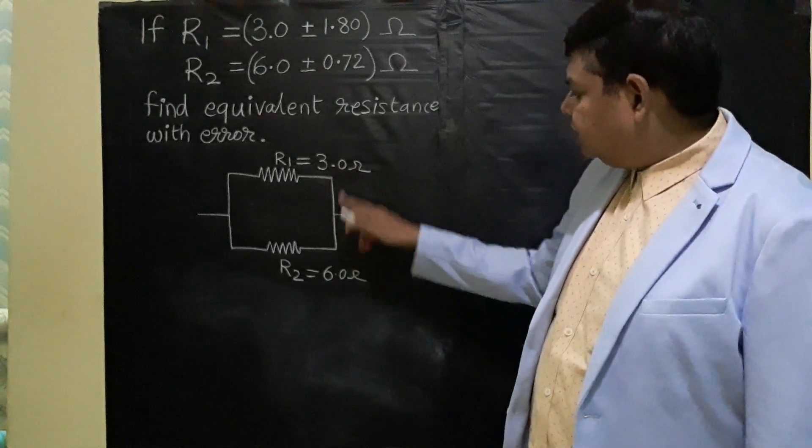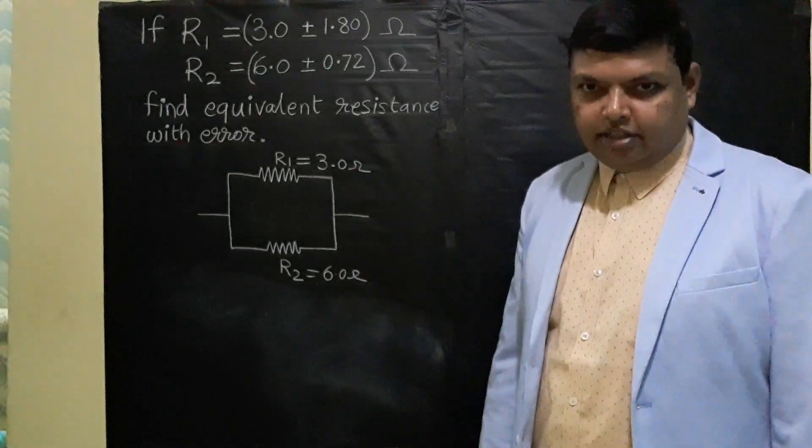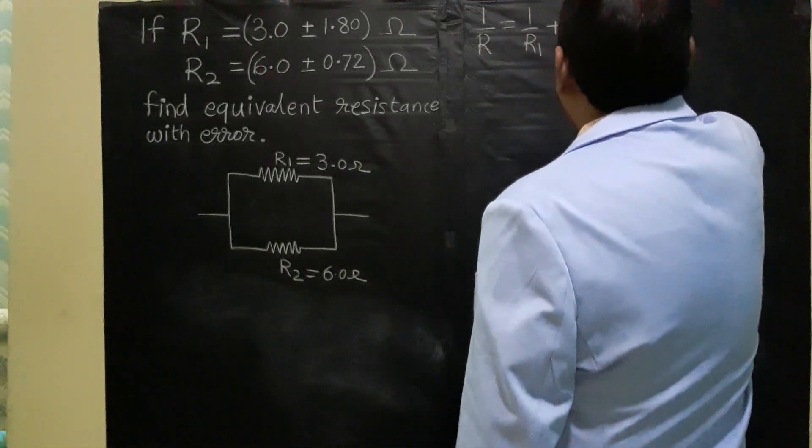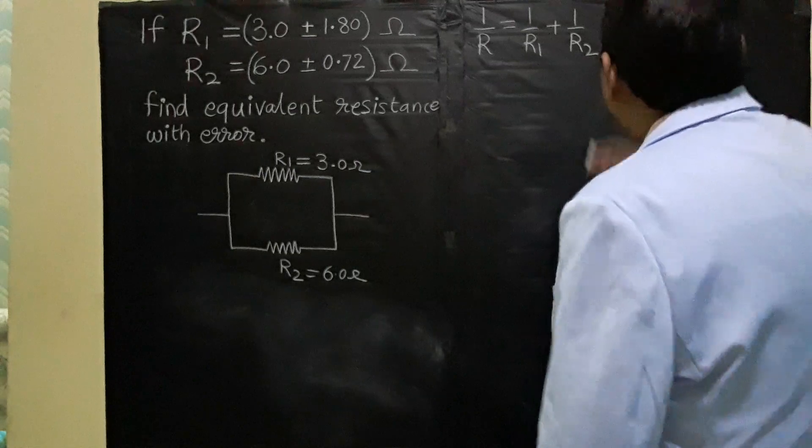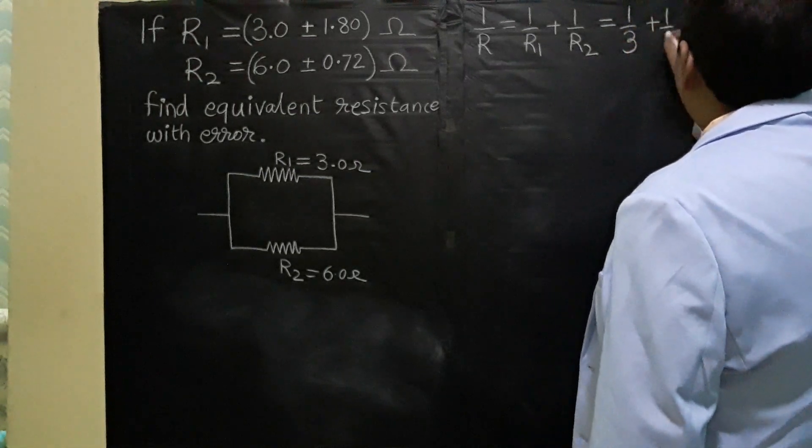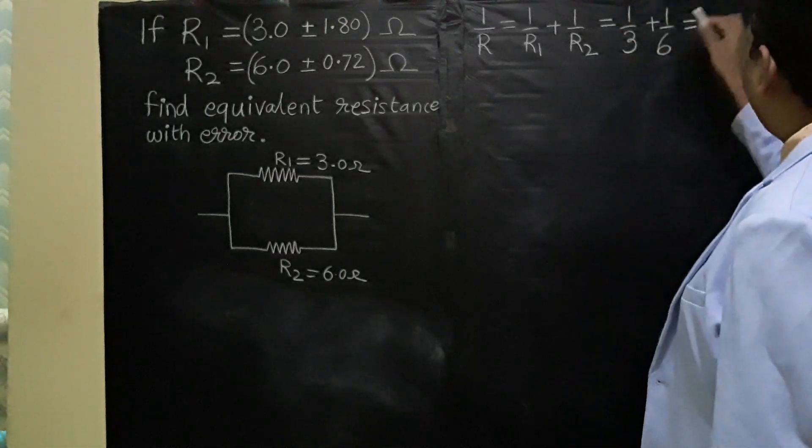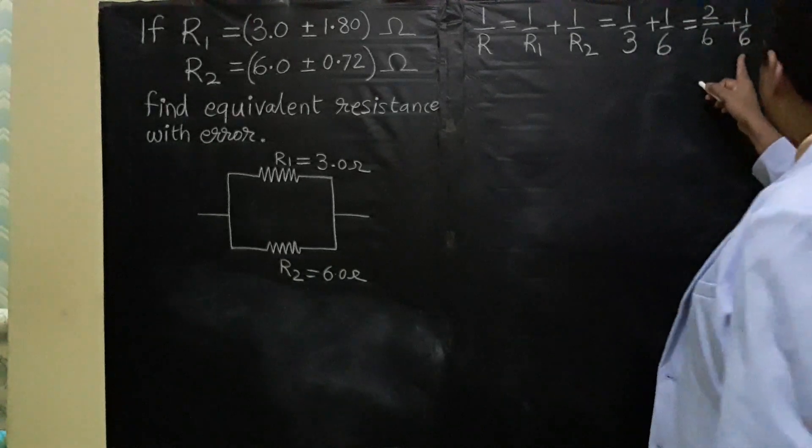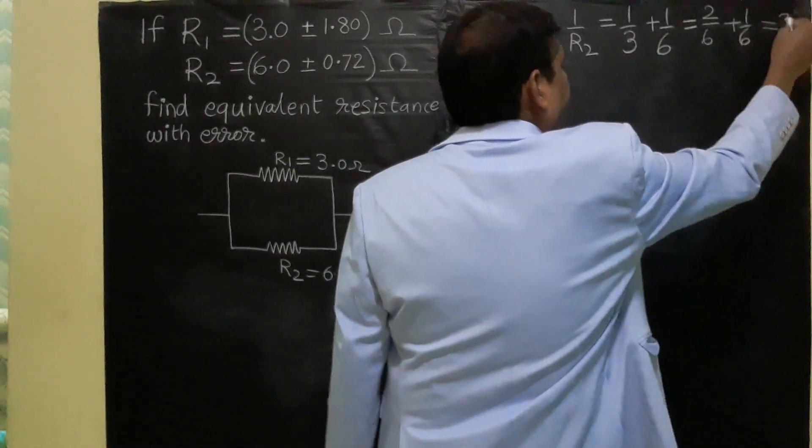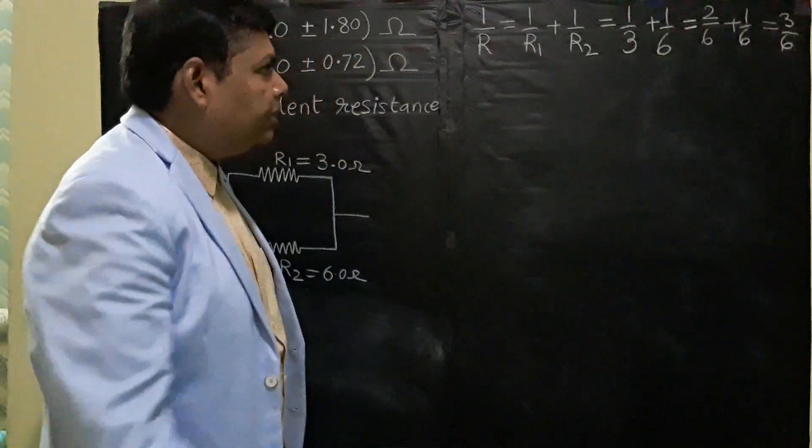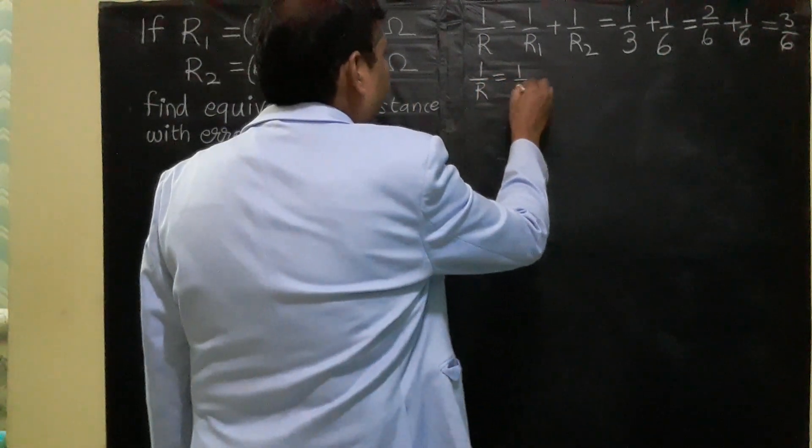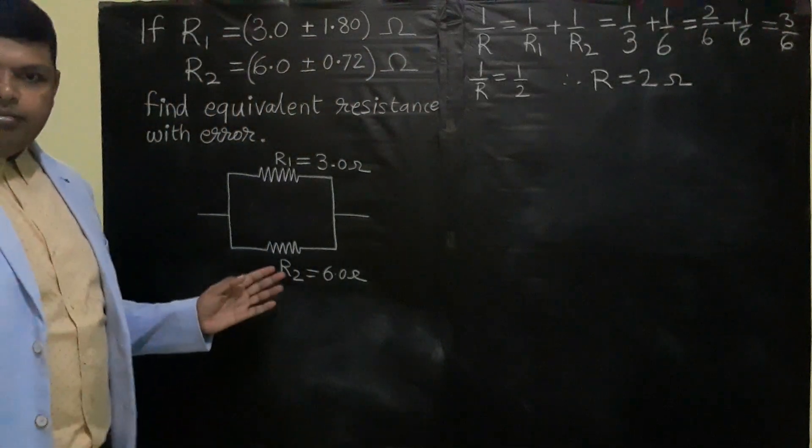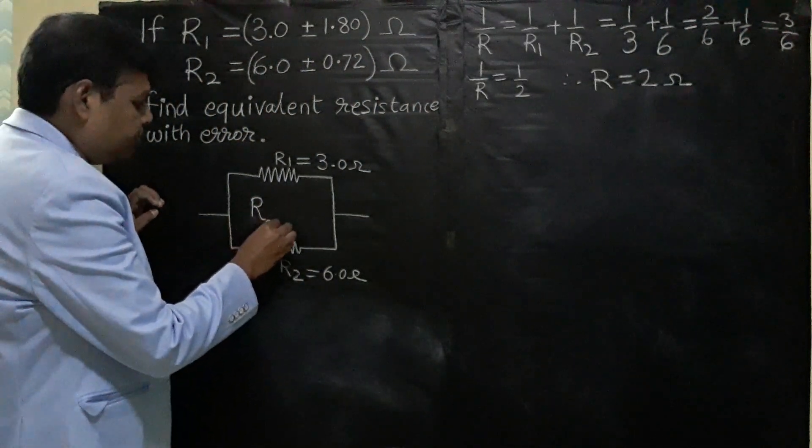Now as these resistances are 3 and 6 ohm, finding their equivalent resistance is very easy. By using the formula 1/R = 1/R1 + 1/R2, the value of R1 is 3 and R2 is 6. So 1/3 can be written as 2/6, which becomes 3/6 or 1/2. Therefore the equivalent resistance equals 2 ohms. So the equivalent resistance is equal to 2 ohms.